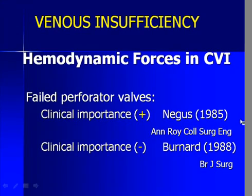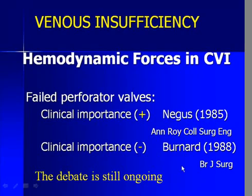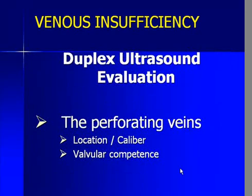There is some ongoing debate about the importance of perforator vein incompetence. In the mid-1980s, a couple of well-noted clinicians in the United Kingdom both wrote papers about the clinical importance — one claiming they were very important and Dr. Bernard saying they really had no clinical importance. That controversy is still ongoing, and it really becomes a function of individualizing each patient and looking at the underlying cause of their chronic venous insufficiency and the clinical changes associated with that. Duplex ultrasound is an excellent means of identifying the location of perforating veins; we can measure their lumen diameter or caliber and readily assess valvular competence with color Doppler imaging.